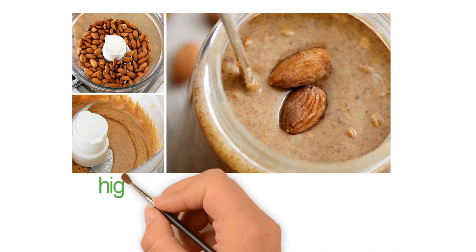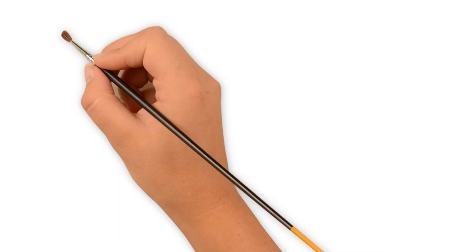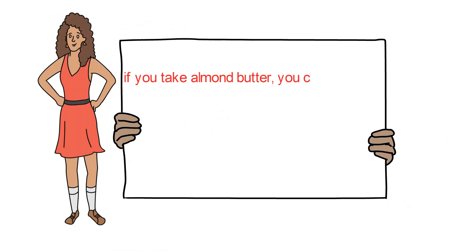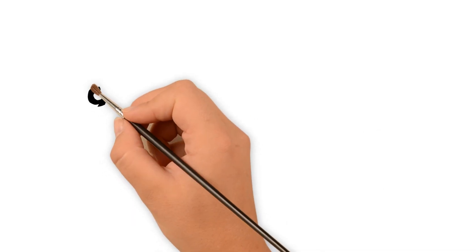Unprocessed almond butter is high in protein, low in carbs, and also contains fibers. Moreover, if you take almond butter, you can get more minerals, vitamins, and fiber, and less saturated fats and sugar per serving.